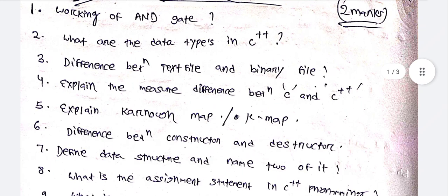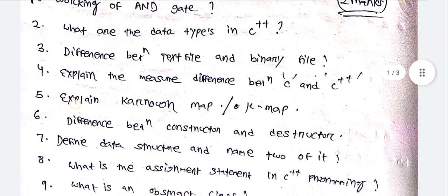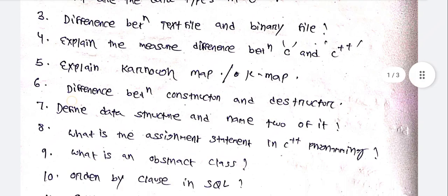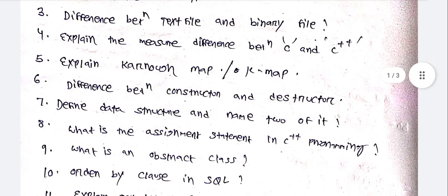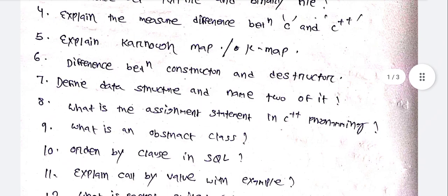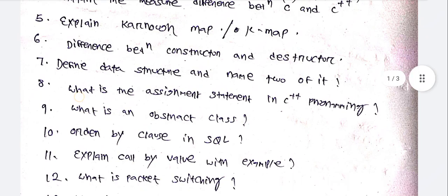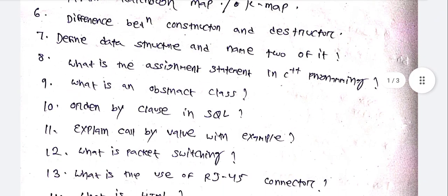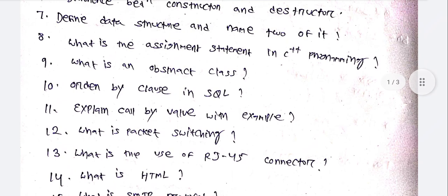What are the data types in C++? Difference between text file and binary file. Explain the major difference between C and C++. Explain Karnaugh map (K-map). Difference between constructor and destructor. Define data structure and name two of them. What is the assignment statement in C++ programming?